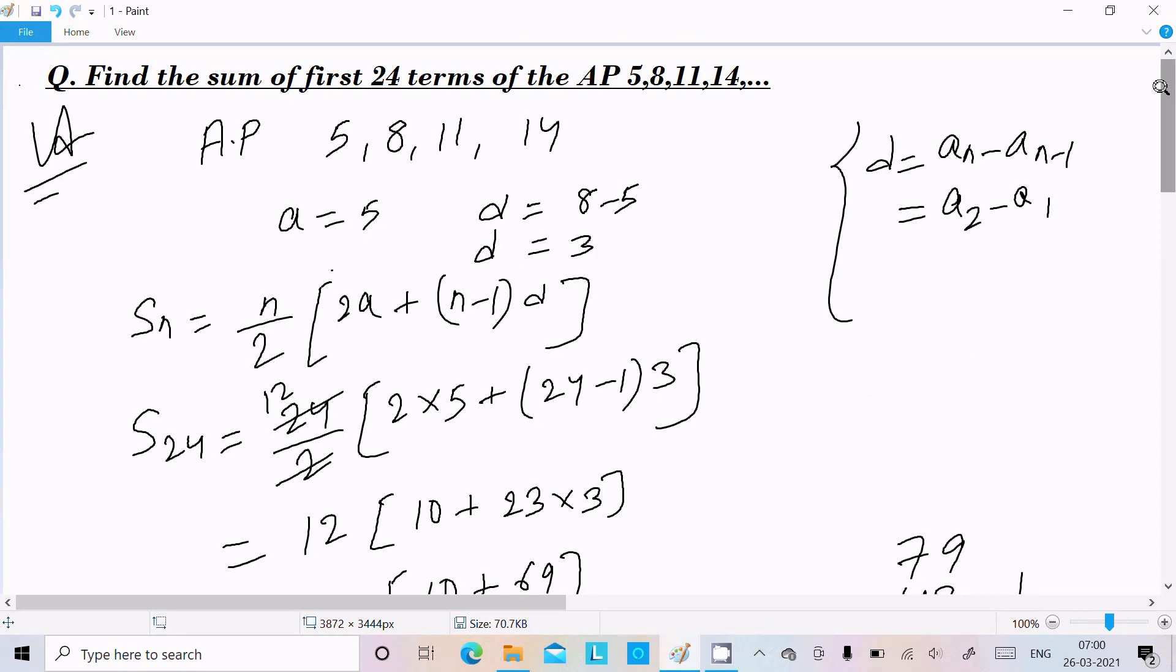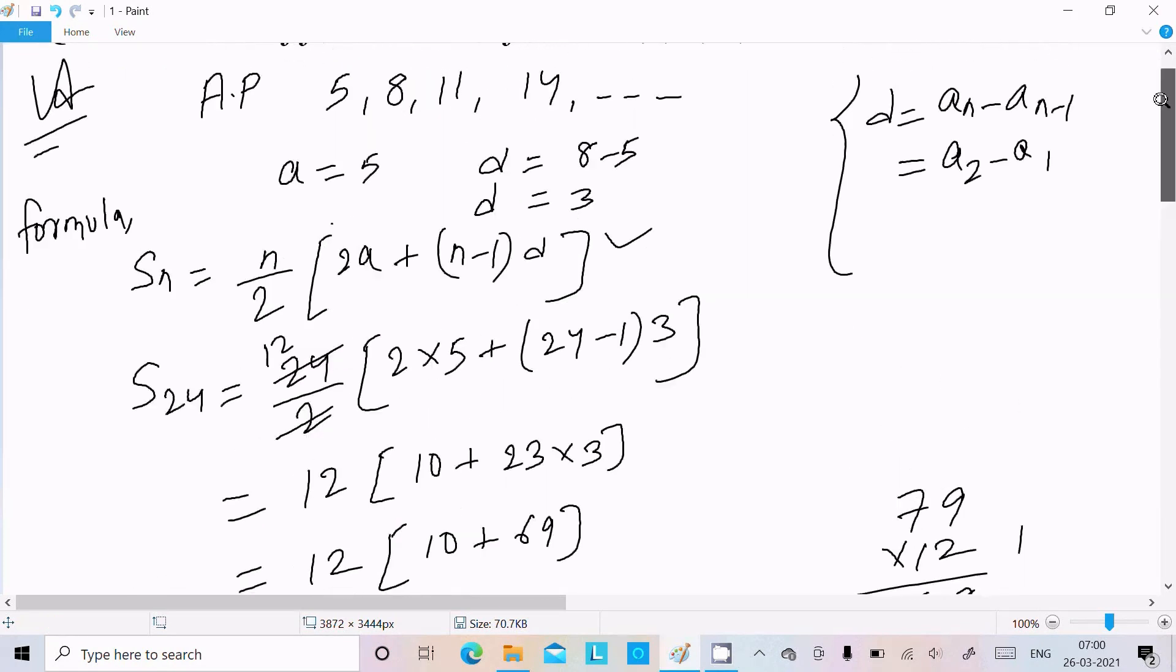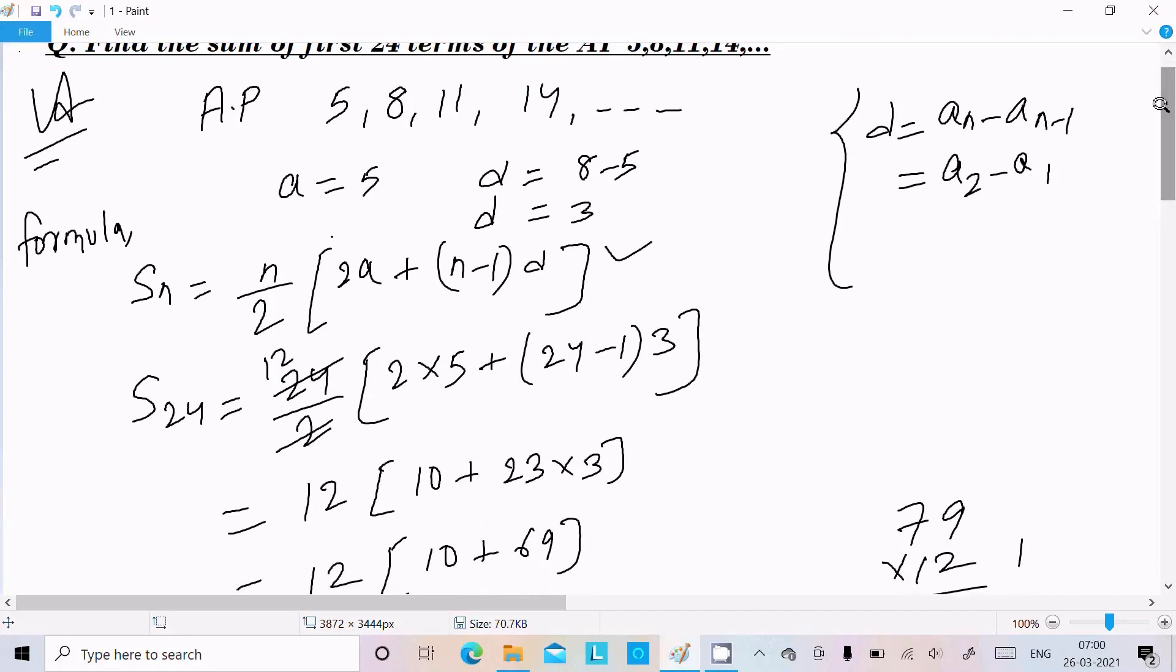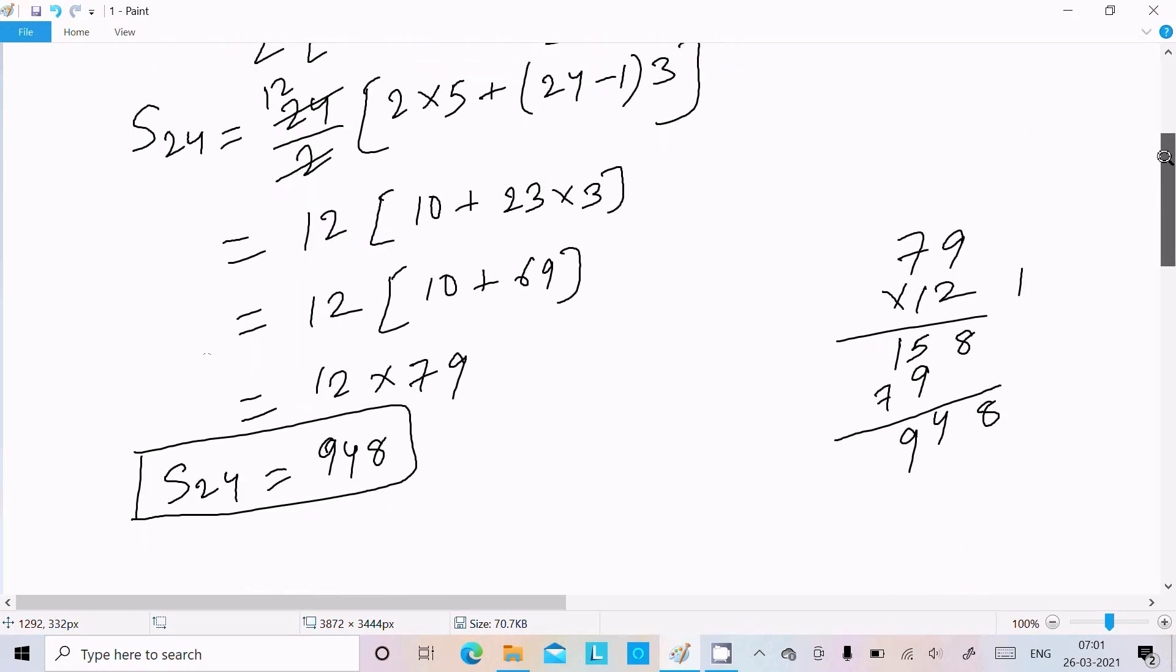This is the way we can find the sum of 24 terms of the AP. First write the AP, identify the first term and the common difference, then use the formula S_n = (n/2)[2a + (n-1)d]. Put n equals 24 and substitute all the values, and you get the sum of 24 terms.